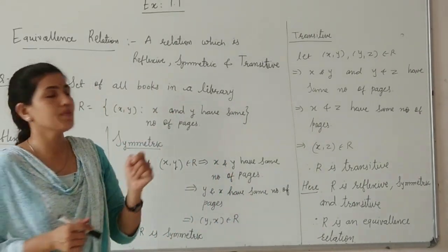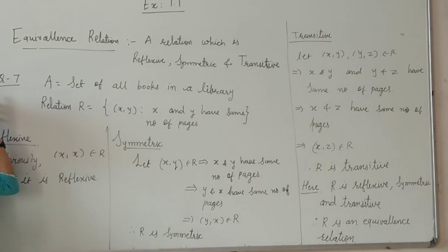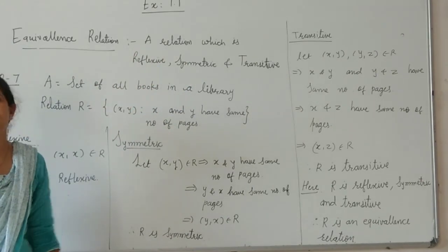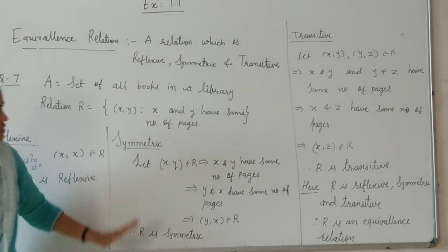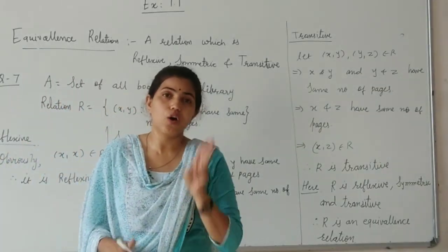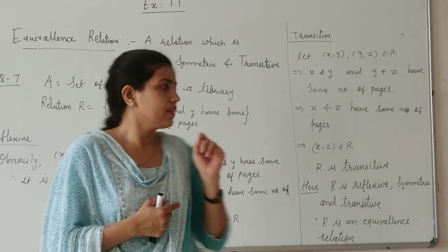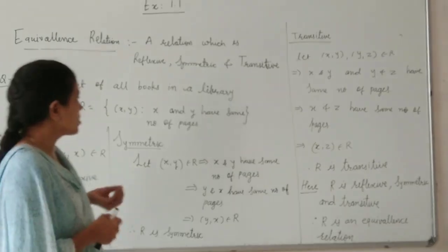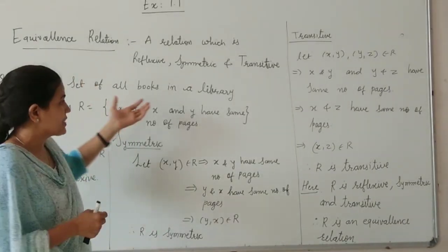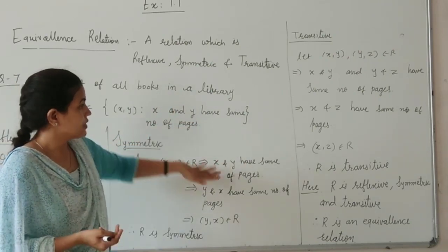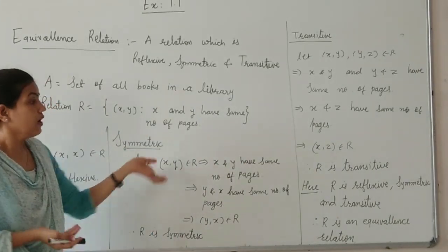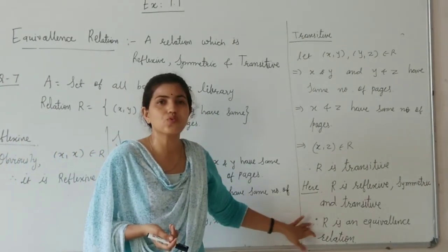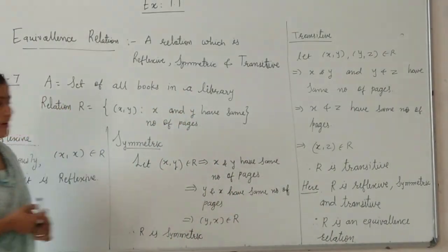So this is the first question based on the equivalence relation and it is very easy. Because the question is straightforward: X and Y have the same number of pages. So it is reflexive, symmetric, and transitive, and therefore it is an equivalence relation. You can write this in the board exam as well — this is one question that is easy to understand.